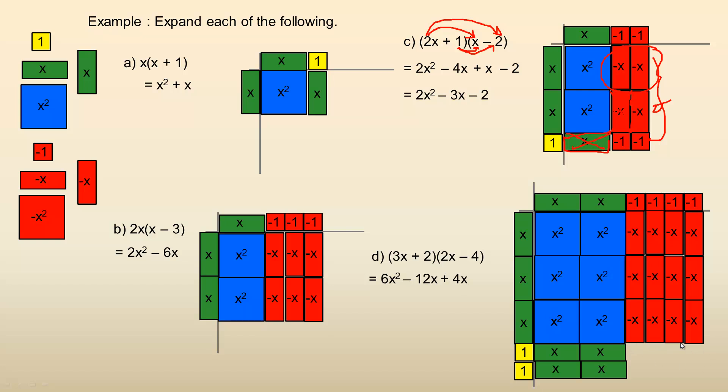And then on the end here, see this is negative four times positive two. So there's going to be eight negatives there. Two times negative four is negative eight.